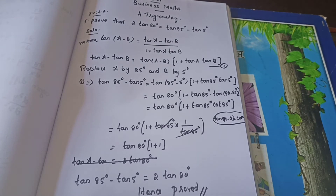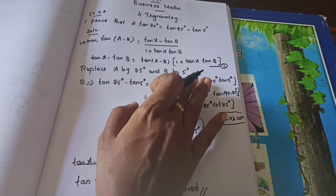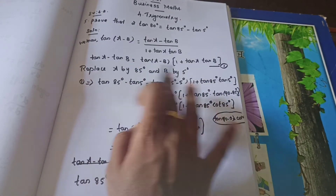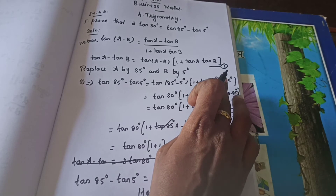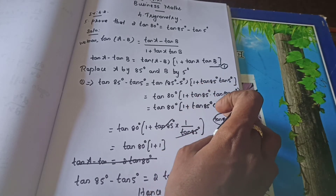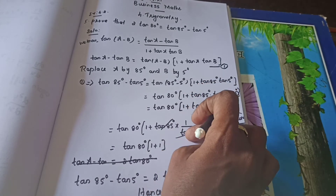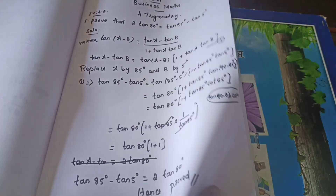Have you understood? Very easy. So use the tan a minus tan b formula. Substitute in the place of A and B. Here you need to change tan 5° as cot, and afterwards by using the reciprocal ratio it gets cancelled. Shall we move to the next question?